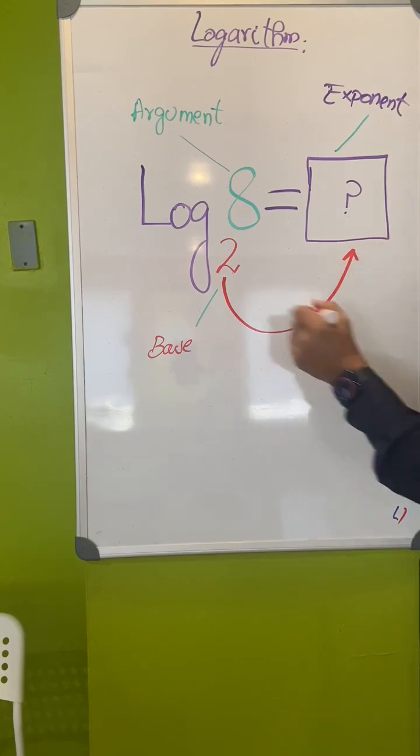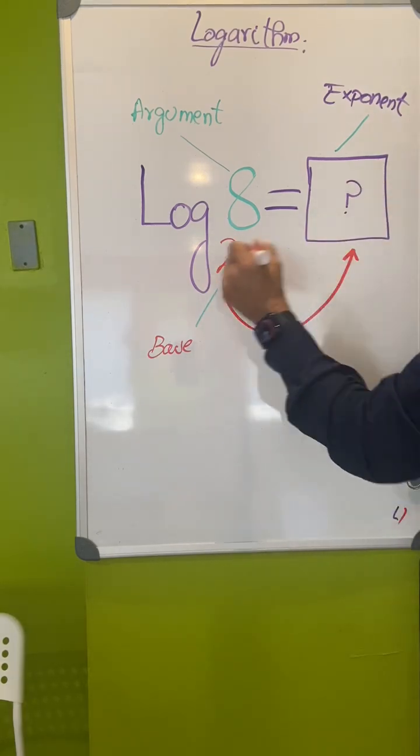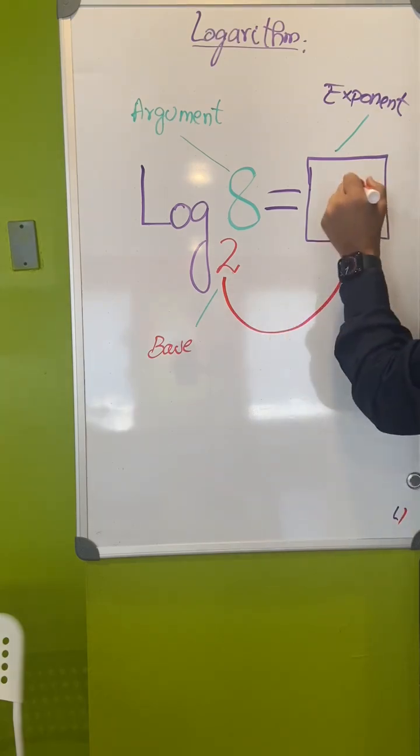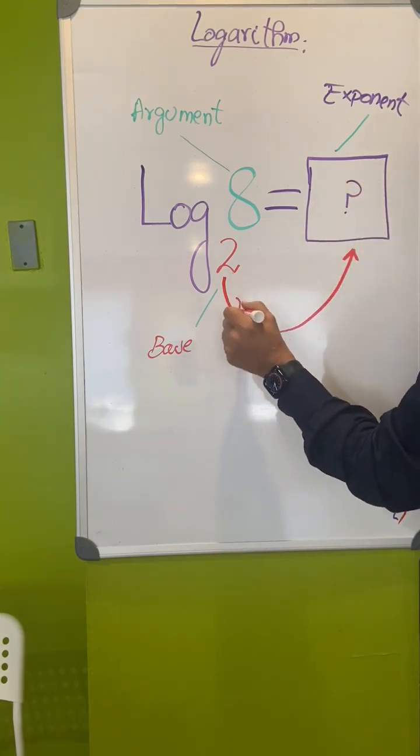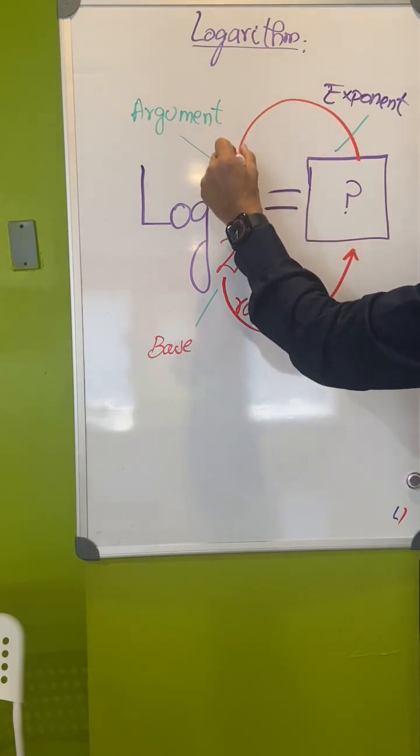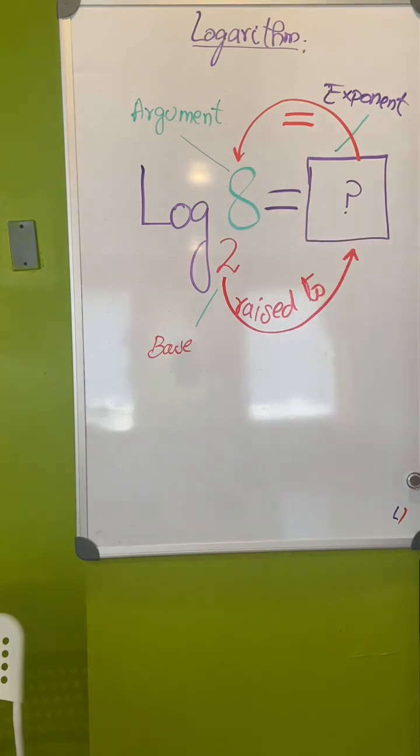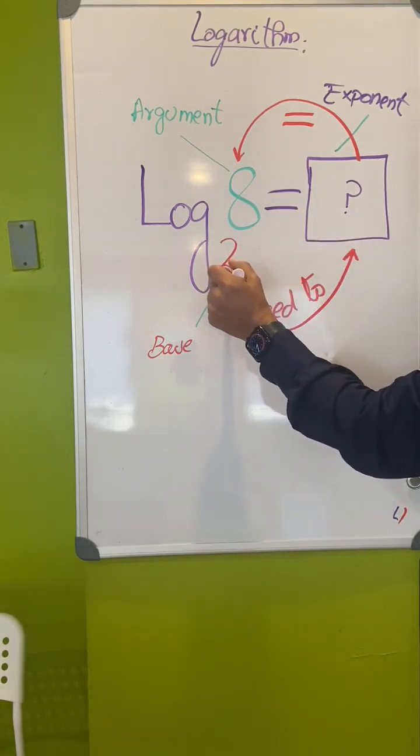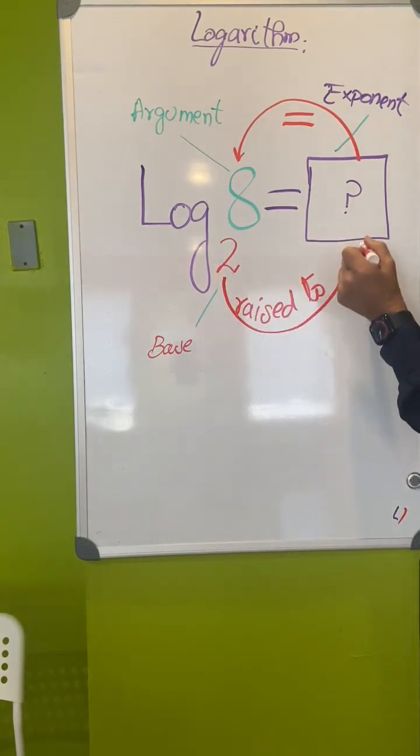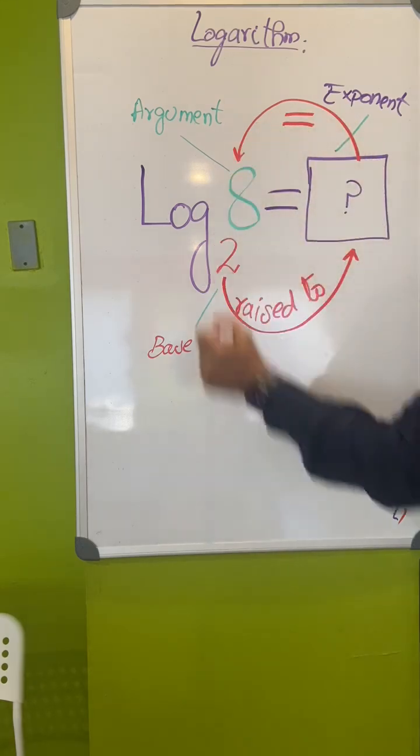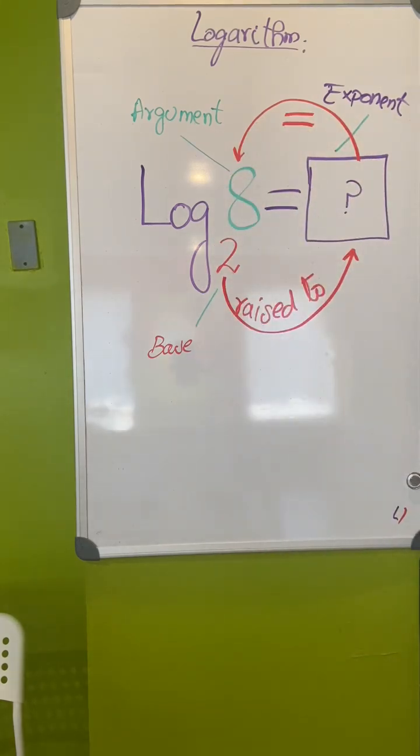So base, raise to, or to the power, whatever way you say. 2 to the power this, or raise to this, equal to, or becomes, argument. So the journey starts from here, the round trip, 2 raise to, and it lands on argument. So let's rewrite it in an exponent term.